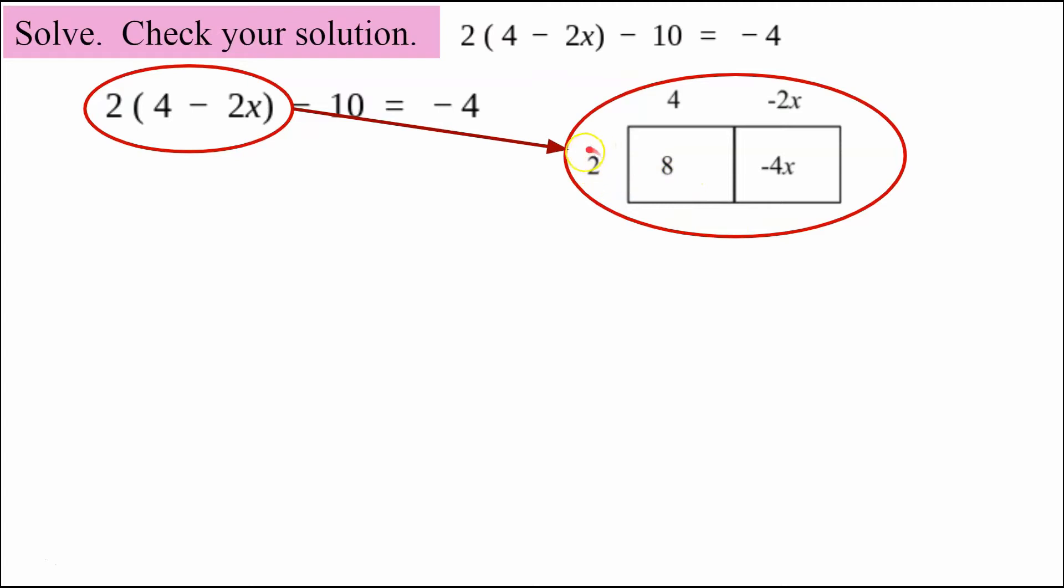So we're going to do 2. We can see where we got that from. That's the value that's outside the parentheses. Then we take this expression inside the parentheses and bring it to the top of each box.